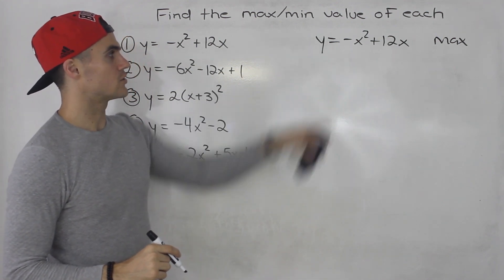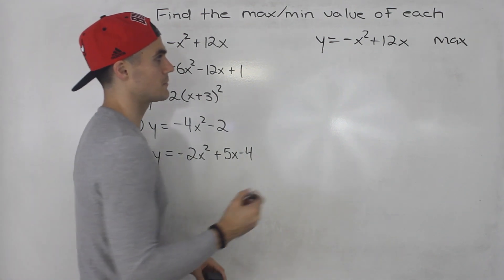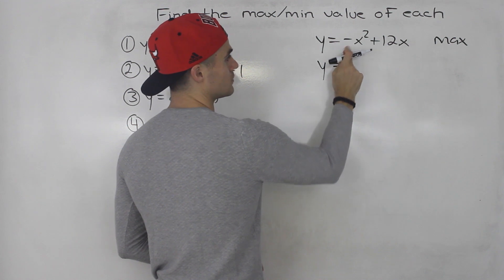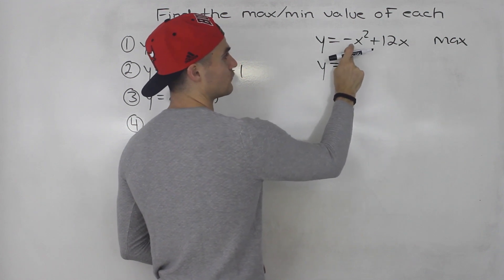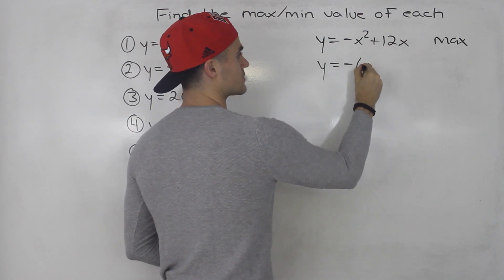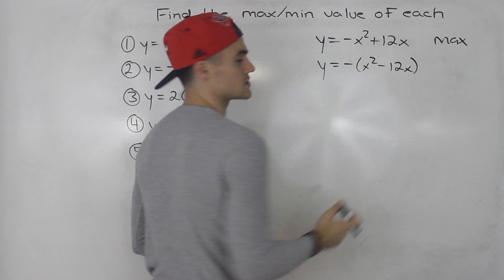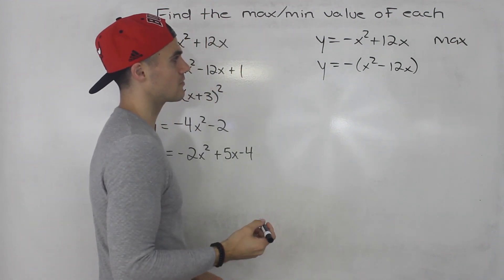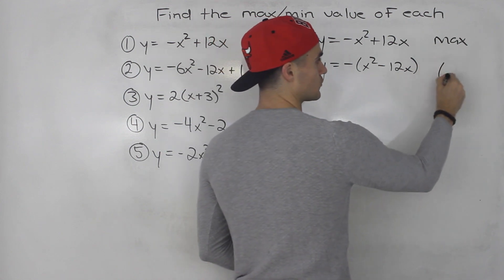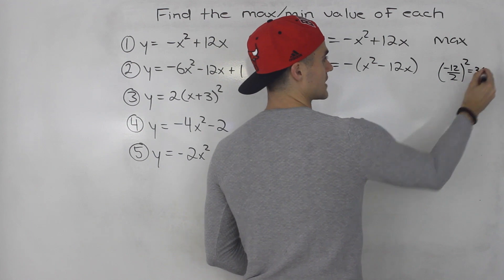With this particular quadratic, there are multiple ways to do it. I'm going to complete the square. First, you factor out any coefficient in front of the x squared from the first two terms — that would be x squared minus 12x. Notice there is no c value. Then you take this value, negative 12 divided by two, and square it — that gives us 36.